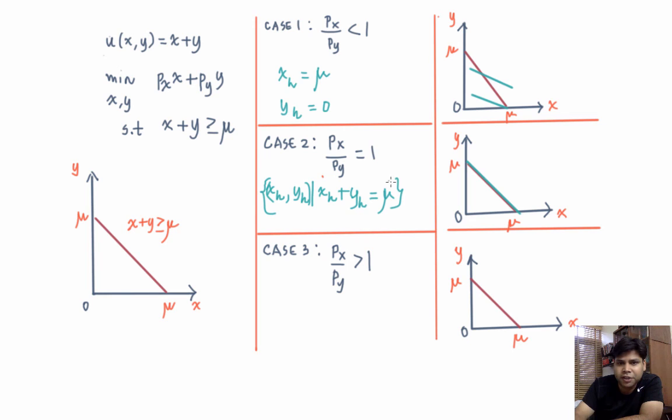Now in case 3, when px by py is greater than 1, just check that the solution will be 0 units of x and mu units of y.